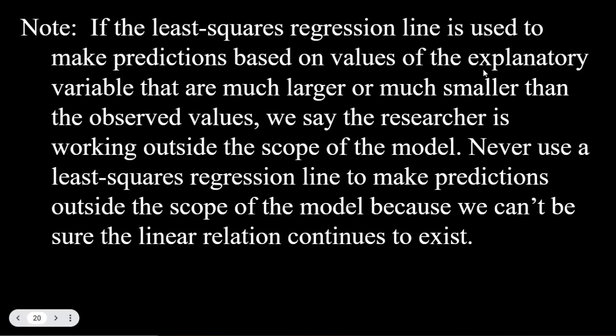If the least squares regression line is used to make predictions based on values much larger or smaller than the observed values, the researcher is working outside the scope of the model. Never use a least squares regression line to make predictions outside the scope of the model because we can't be sure the linear relationship will continue to exist. For example, cricket chirp rates follow a pattern at moderate temperatures, but at extreme temperatures crickets die or hibernate, so the pattern breaks down.